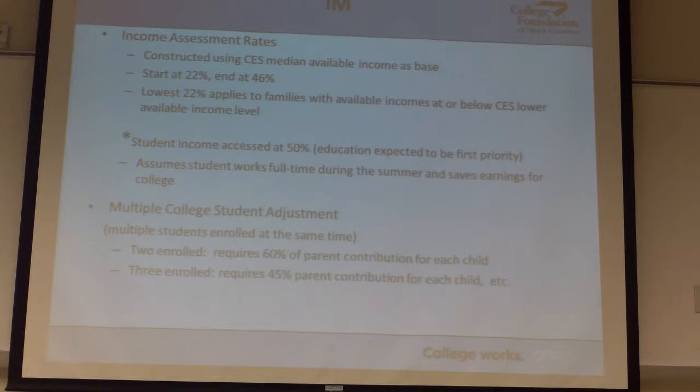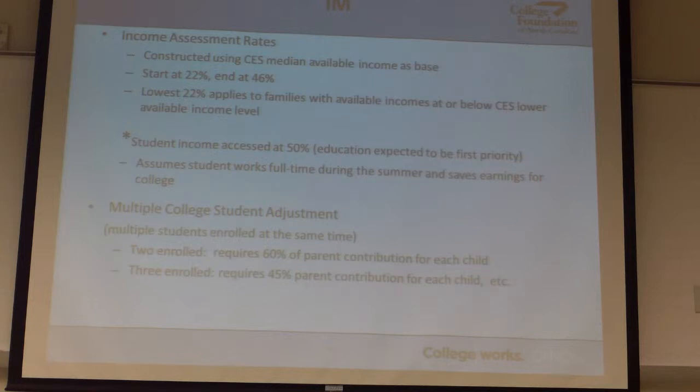We also have these bands. Depending on where your income falls, it's just like taxes — the more money you make, the higher we effectively tax for the purpose of college. Families in our upper income brackets, for every additional dollar they make, might pay 45% or 46% toward college, whereas families in our lowest income brackets are protected and might only be paying 22%, just like your taxes. That's how we assess it.